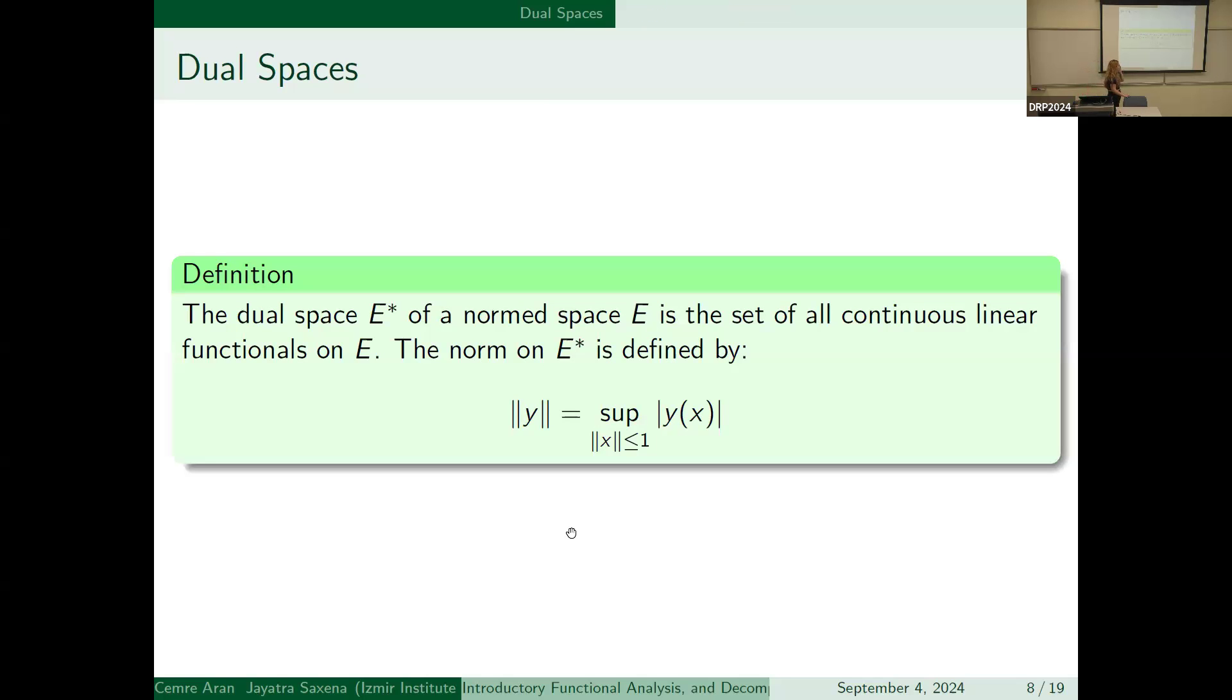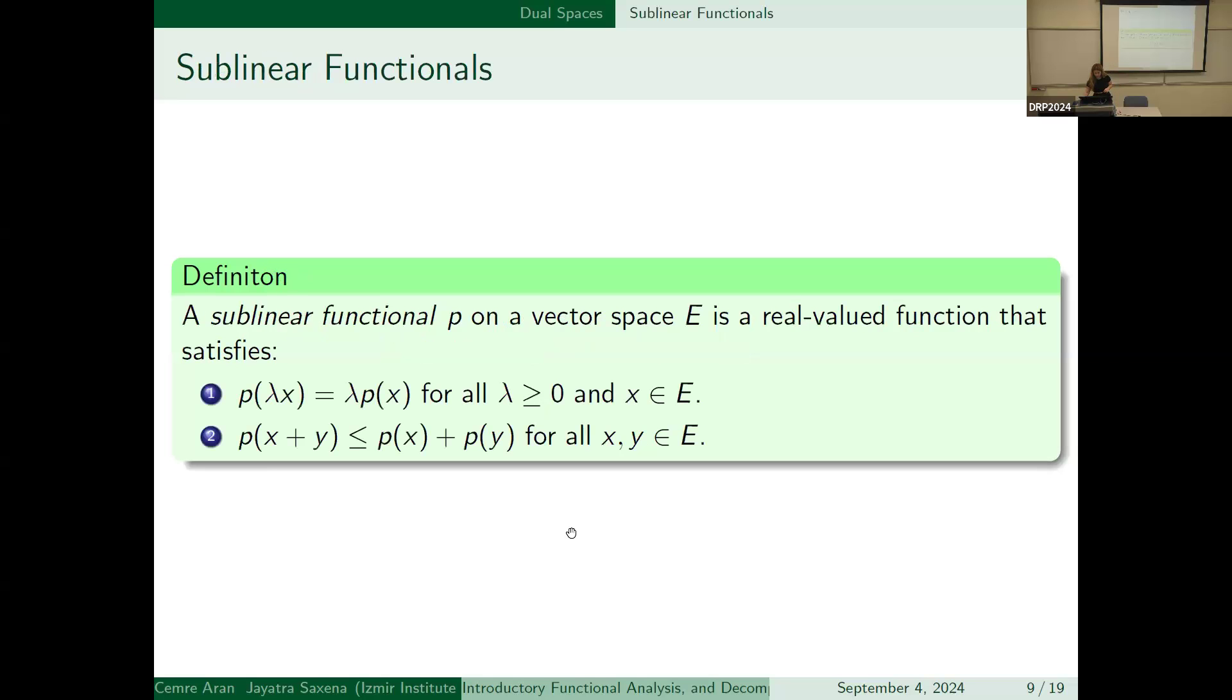And we can look at dual spaces now. Dual space E* is, for a normed space E, stated with lambda(x) is equal to lambda p(x), and p(x+y) is less than or equal to p(x) plus p(y). And it satisfies this statement, p(lambda x) is equal to lambda p(x), and p(x+y) is less than or equal to p(x) plus p(y).